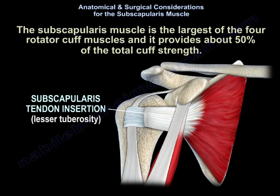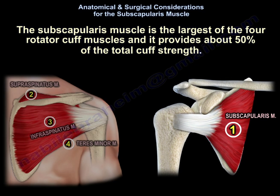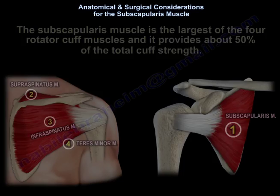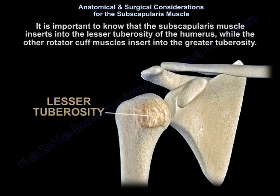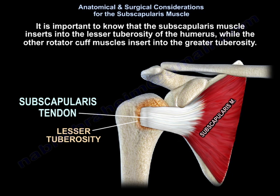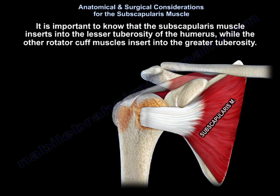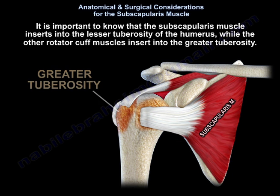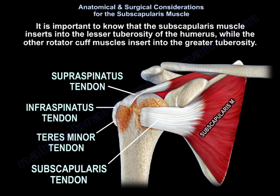The subscapularis muscle is the largest of the four rotator cuff muscles and provides about 50% of the total cuff strength. It is important to know that the subscapularis muscle inserts into the lesser tuberosity of the humerus, while the other rotator cuff muscles insert into the greater tuberosity.